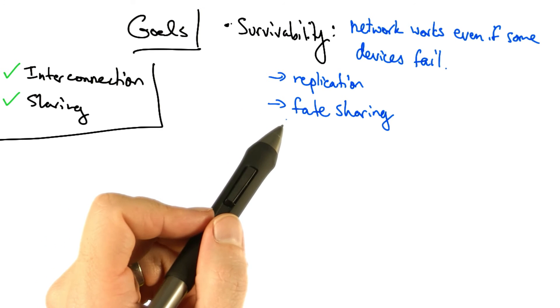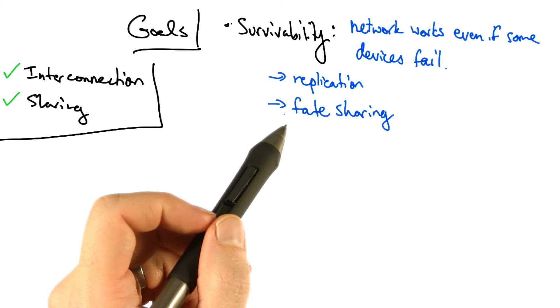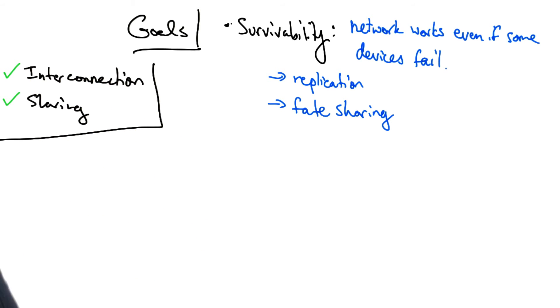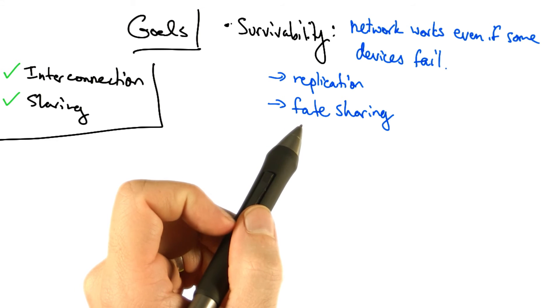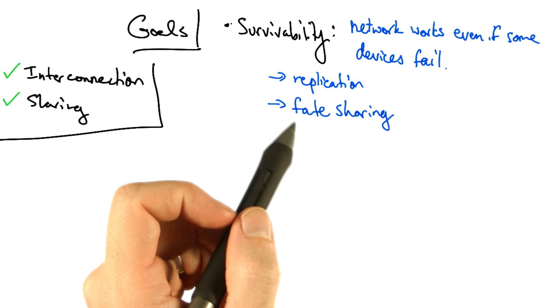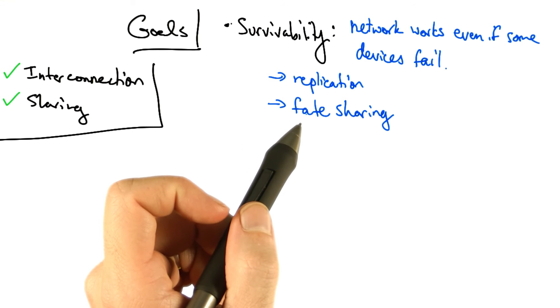For example, if a router crashes, all of the state on the router, such as the routing tables, are lost. If we can design the network to sustain these types of failures, where the state of a particular device shares the fate of the device itself, then we can withstand failures better.